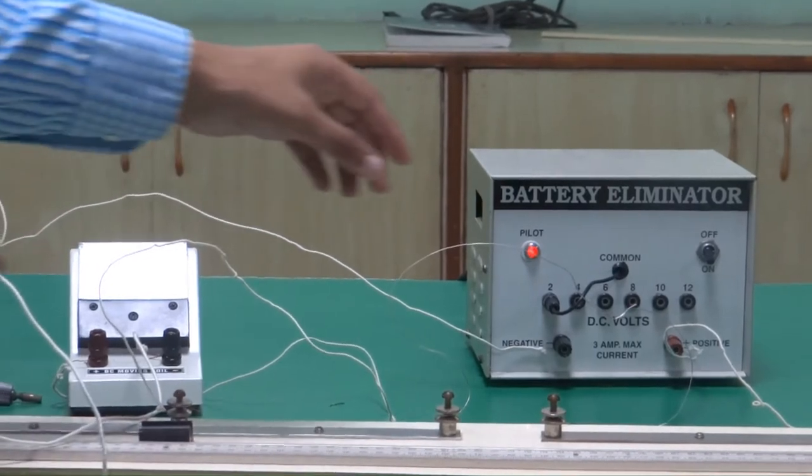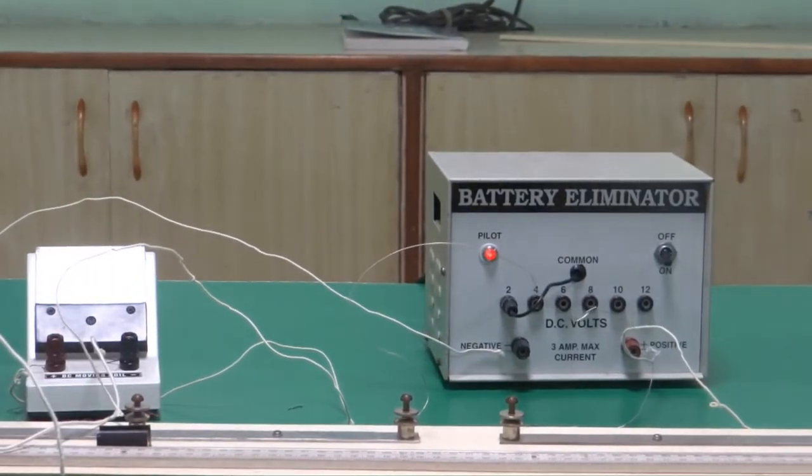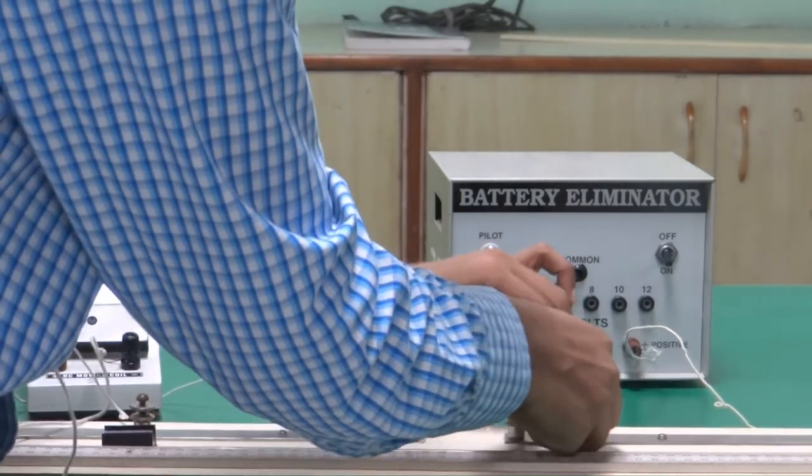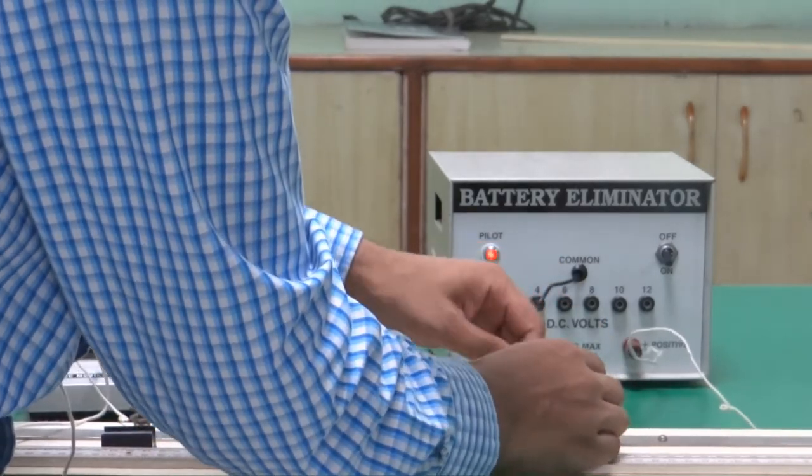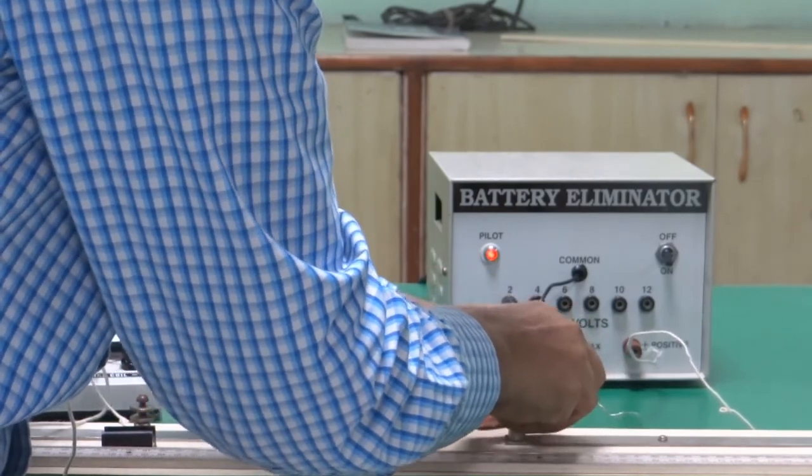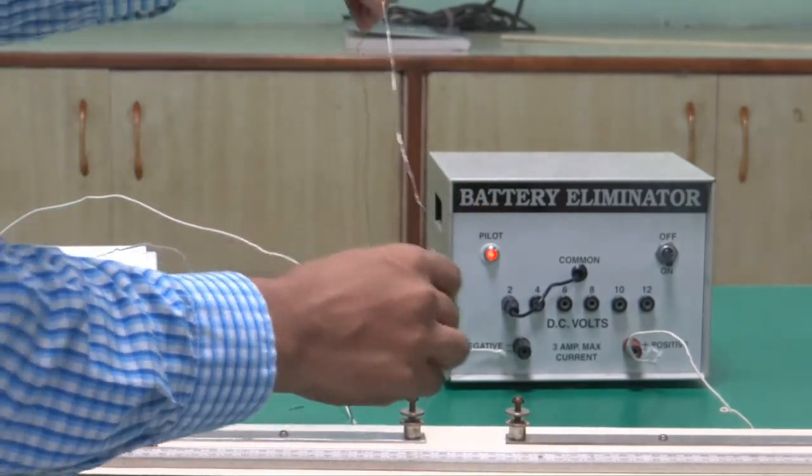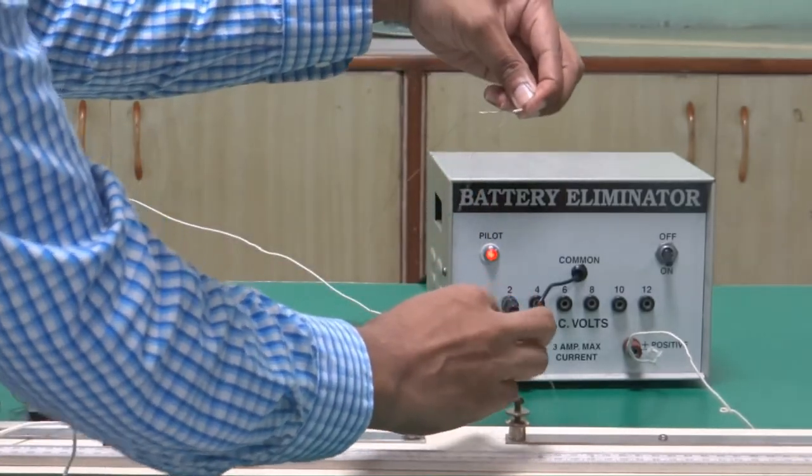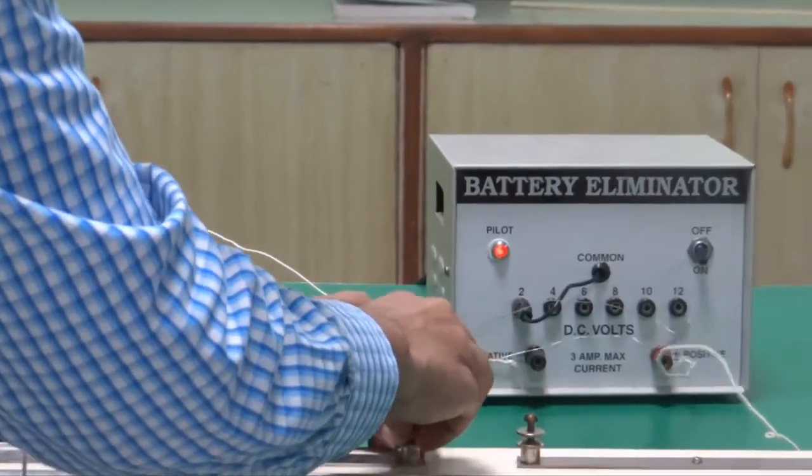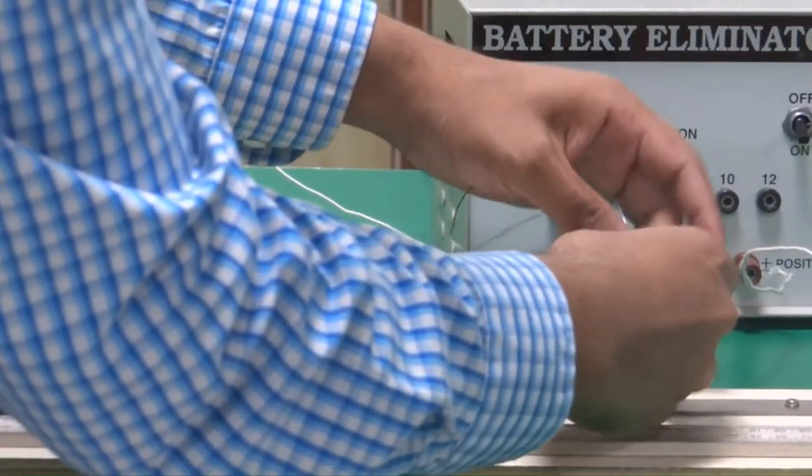Now we want to calculate the value of the resistance when these are in parallel. Take precaution that you take the key out. Take both the wires out of this slot. Now how to connect this in parallel? Attach both the extremities of the wire. The other two at the second end.